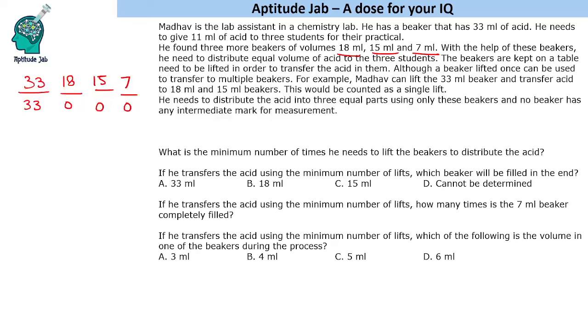That seems a better way because we can directly get 11 here. So he will lift the beaker once and distribute 15 here and 7 here. So this will be left with 11. This is the first lift.